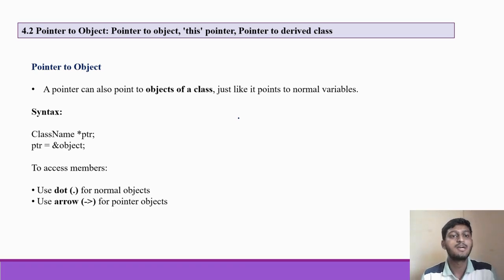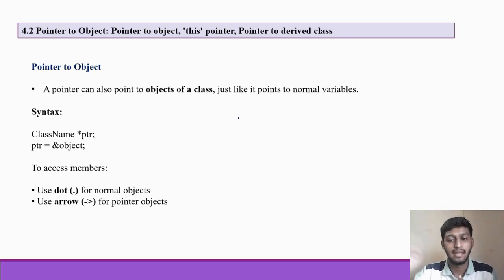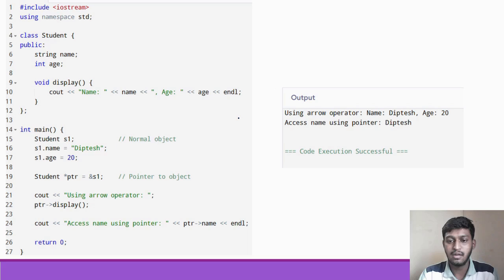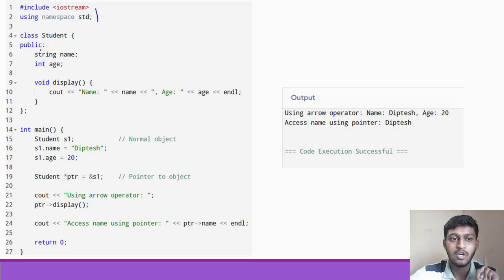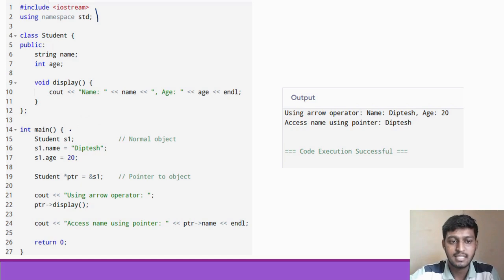Let's start with the first concept: pointer to object. Just like we can point to a normal variable, we can also point to an object. Here is our example. We include all libraries, then we have our class Student — it is public and has two data members: name and age. Then we have a member function display, which displays name and age. This is our basic class code.